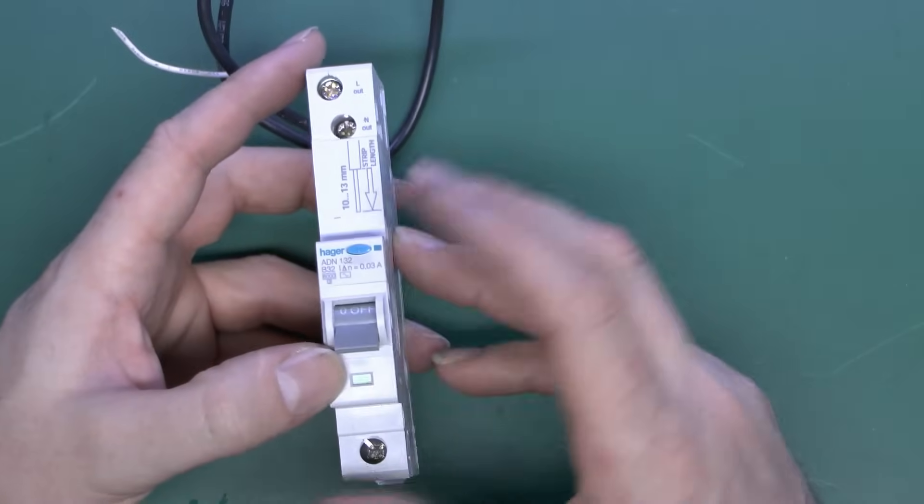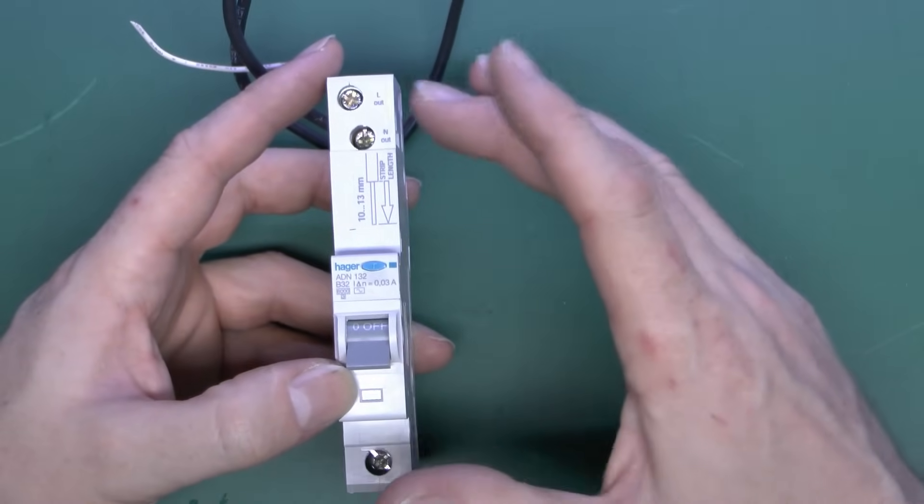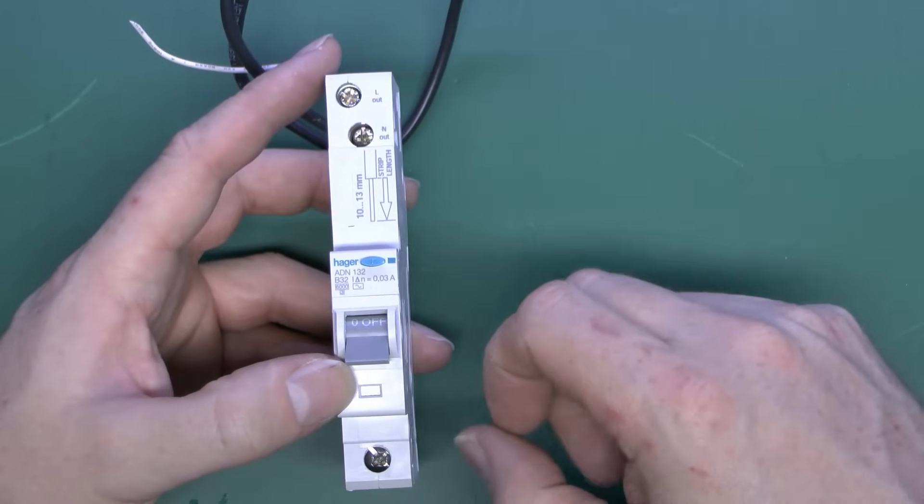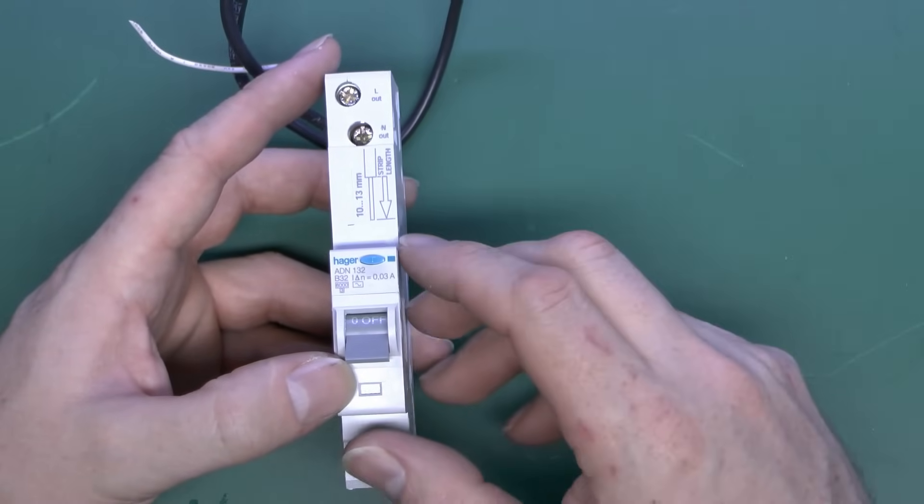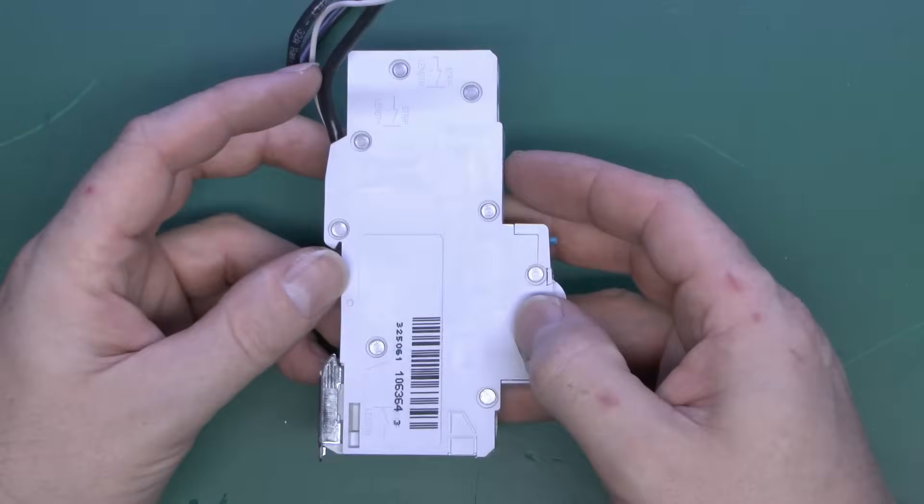You can get double pole ones which switch the neutral as well, but generally they're wider divided and sort of two modules wide. They also cost more, and of course are not used as often as these.